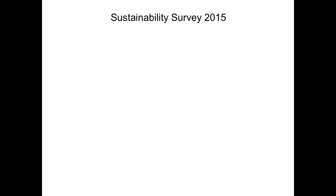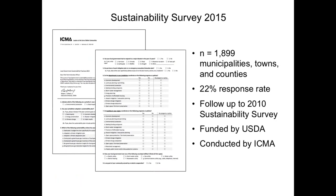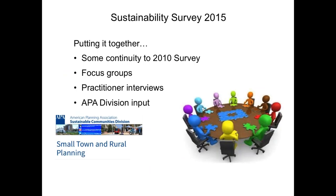We did a survey of local governments across the country in 2015, conducted by the International City County Management Association. We had about 1,900 municipalities, towns, and counties respond. This was a follow-up built on a previous ICMA survey from 2010, and was funded by the U.S. Department of Agriculture. There was a lot of input to this, including from our partners at the Sustainable Communities Division and the Small Town and Rural Planning Division. They helped us shape the survey, participated in practice groups, reviewed it with us, and promoted it through their divisions.